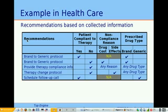Also, if the user is not compliant to the therapy because of side effects due to the drug, then we would initiate a therapy change protocol in order to validate that the therapy in use is adequate for the patient. Then if none of these conditions are found, we would simply schedule a follow-up call later on to ensure that the patient is still doing well. So let's look at those recommendations in a tabular fashion based on the categories of information taken. We would have a category of patient-compliant therapy, which would be either the patient is compliant or not.